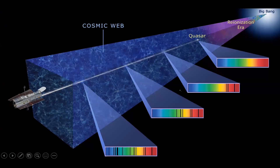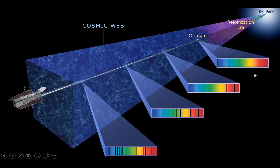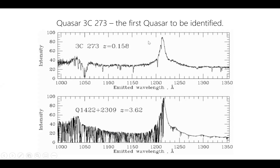If you observe a quasar 10 billion light years away, you can probe 10 billion light years' worth of cosmic web — like taking a core sample. Here's a visual illustration: we're on the left, looking through the universe toward a distant quasar. As the quasar's light travels toward us, the cosmic web absorbs more and more of it. By the time it reaches us, a spectrum that started as a full rainbow now has all of these absorption lines from the cosmic web.